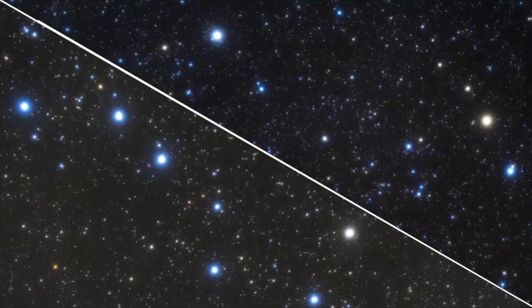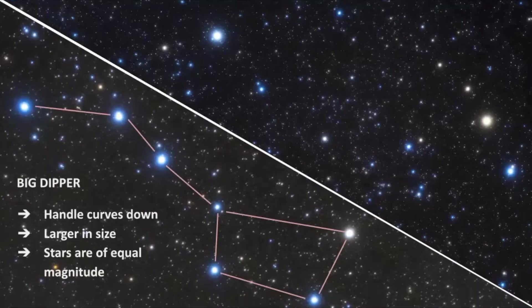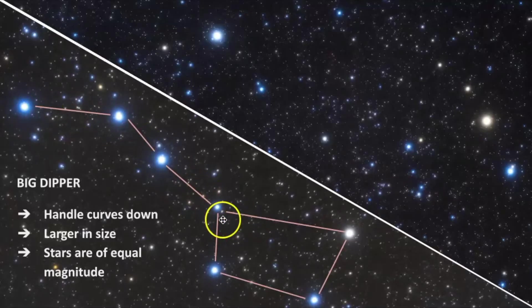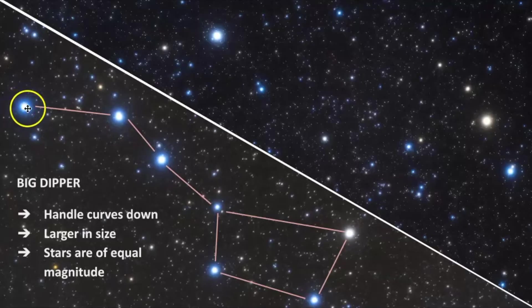Let's jump in with the major differences between the Big Dipper and the Little Dipper. In the Big Dipper, the handle curves differently than it does in the Little Dipper. In this picture, it appears to curve downwards, where here it appears to curve upwards. I'm a little cautious using the words up and down because the orientation of this star pattern can change in the sky, so up and down are kind of relative terms. The Big Dipper is also larger in size, and its seven stars are of fairly equal magnitude.